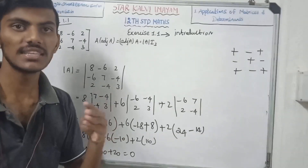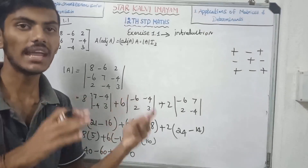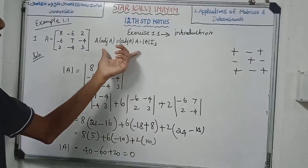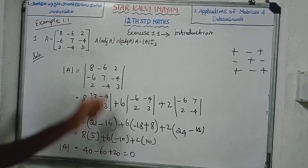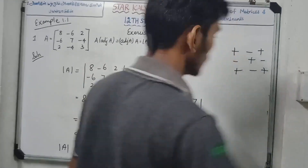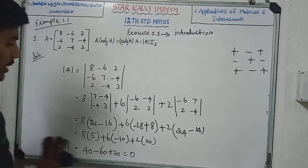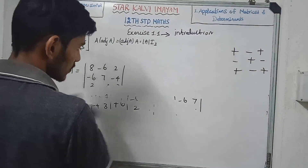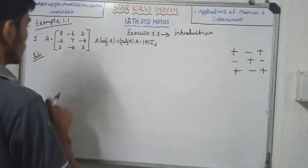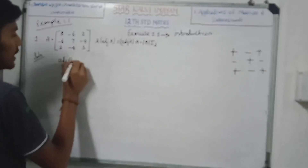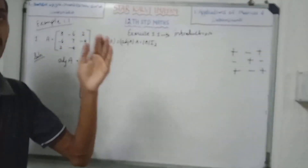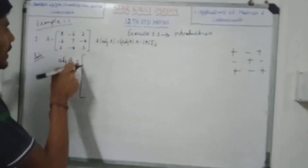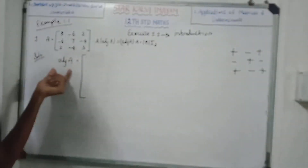Modulus A value is 0. A inverse: since modulus A value is 0, A inverse does not exist. Modulus B — modulus A value 0.